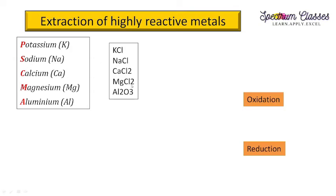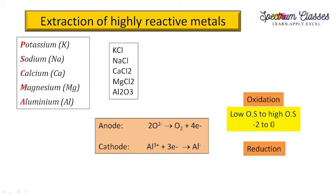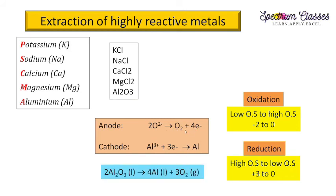For another example, consider aluminum oxide (Al₂O₃). This splits into 2Al³⁺ and 3O²⁻. At the anode, O²⁻ is converted to oxygen gas and electrons are left behind. At the cathode, Al³⁺ receives three electrons and is converted to aluminum metal. The oxidation state goes from −2 to 0 at the anode (increasing, so oxidation), and from +3 to 0 at the cathode (decreasing, so reduction).